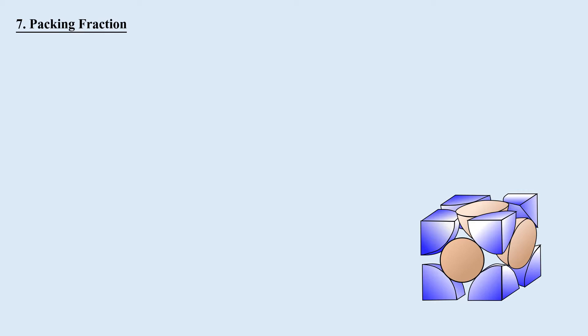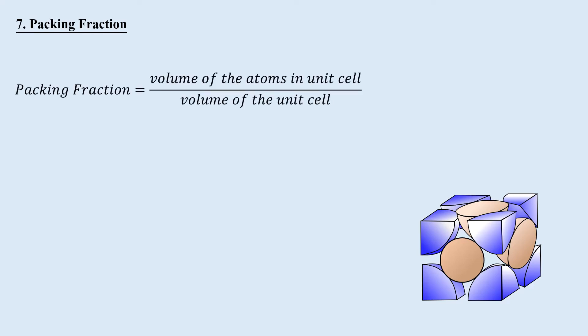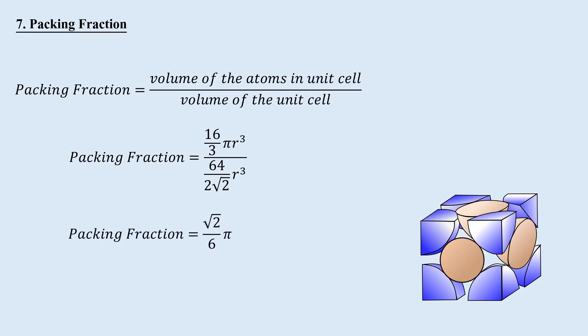Packing fraction indicates how much of the crystal is filled with atoms and how much is vacant. The higher the packing fraction, the denser the crystal. It is the ratio of the volume of atoms in the unit cell to the volume of the unit cell. For FCC: (16/3)πR³ divided by 64/(2√2)·R³ gives a packing fraction of 74%. This means 74% is filled and 26% is vacant. Simple cubic has only 52% and BCC has 68%, so FCC is the most dense among the three.